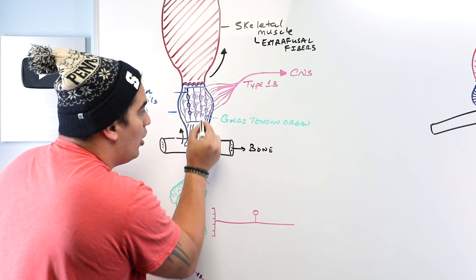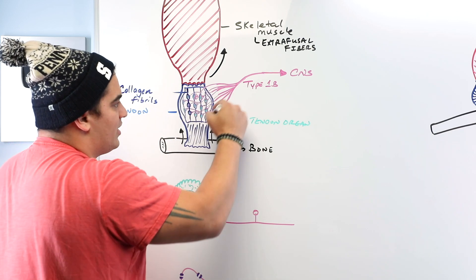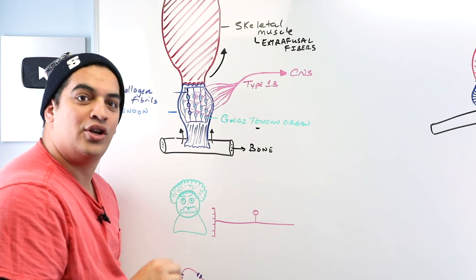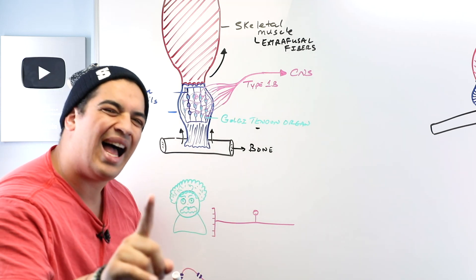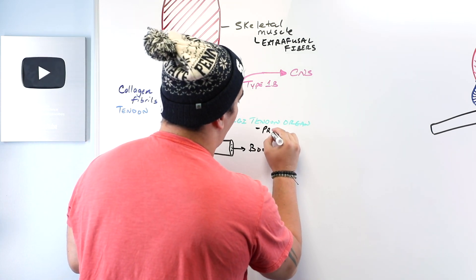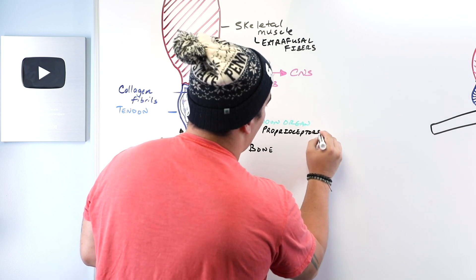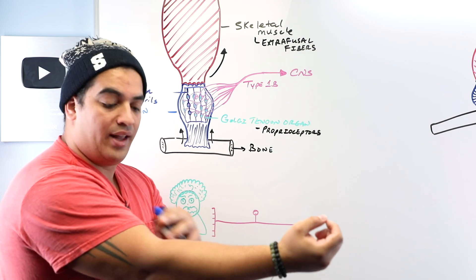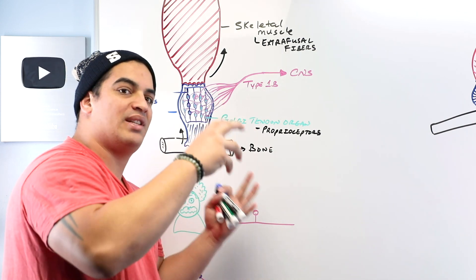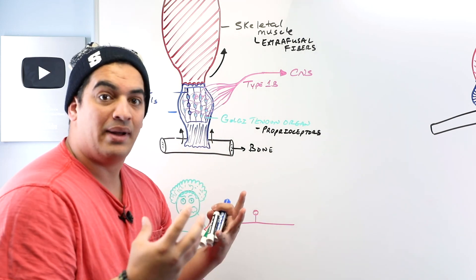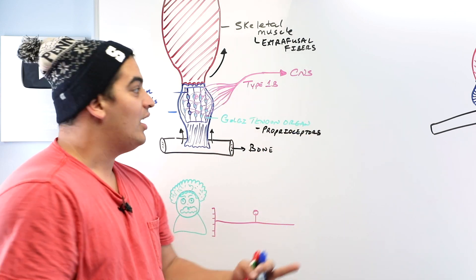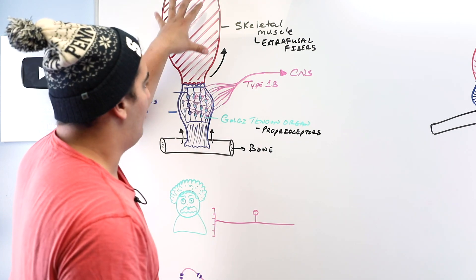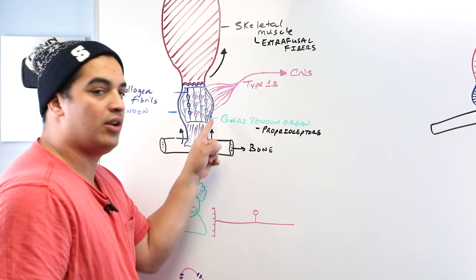The Golgi tendon organs, located within what's called a Golgi organ capsule, can sense the degree of tension in that tendon. These are called proprioceptors — receptors that determine the degree of tension within a tendon crossing a joint. All proprioceptors tell us the position of our muscles, tendons, ligaments, and joints in three-dimensional space, and the Golgi tendon organ is one of those types.